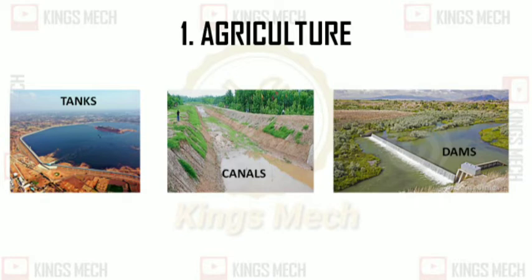The primary important application in Agriculture includes Tanks, Canals, Waterways, and Dams. We are going to see the initiatives in agriculture — these are very important structures that civil engineering has contributed for agricultural purposes.